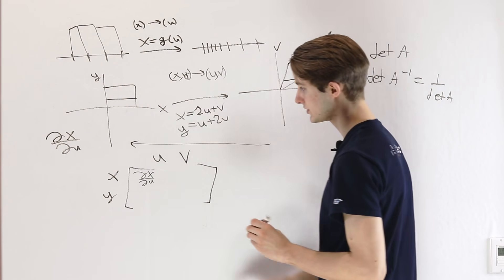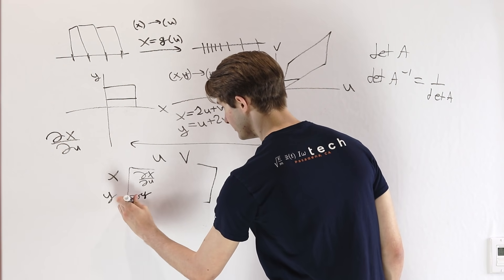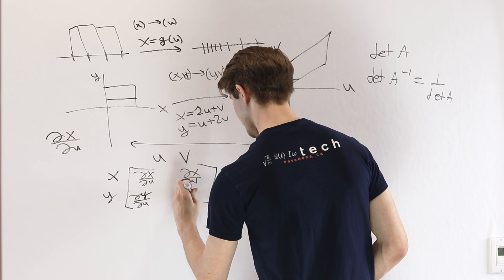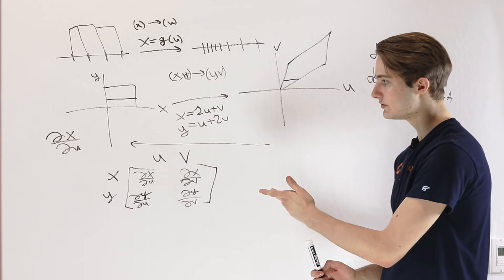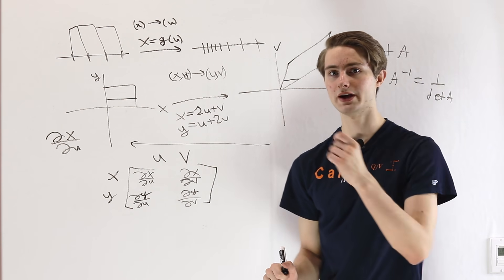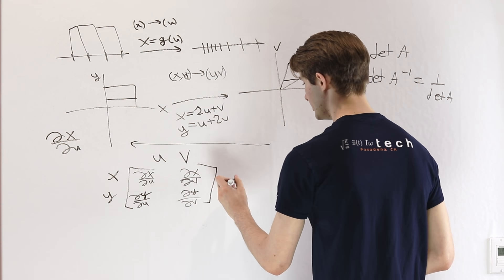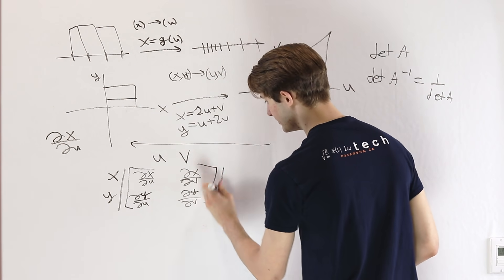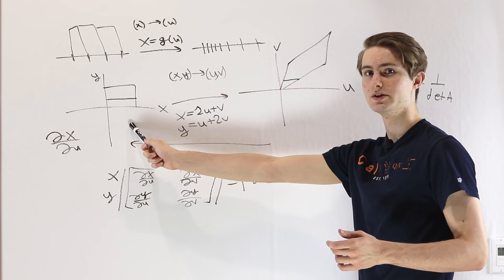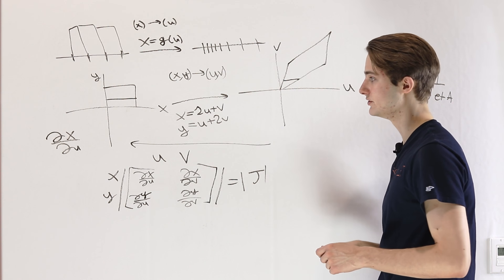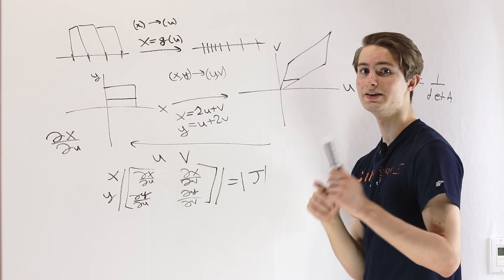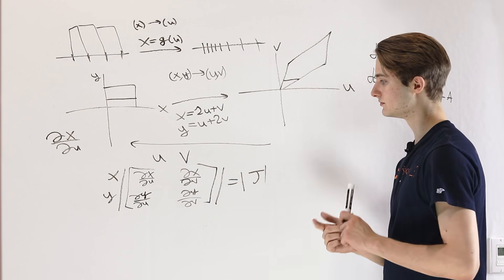This matrix represents the backwards transformation from uv back to xy. If we want to find out how much areas are getting scaled, that is the definition of the determinant. So if we take the determinant of this matrix of partial derivatives, that is the Jacobian. It describes how much areas get scaled backwards — so for our original transformation from xy to uv, this determinant tells us exactly how much area gets squished, which is exactly what we need to multiply to recover the original volumes of our rectangles.